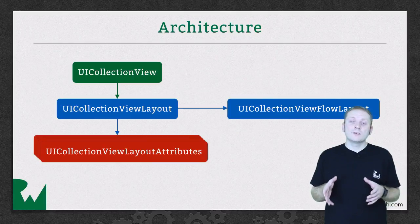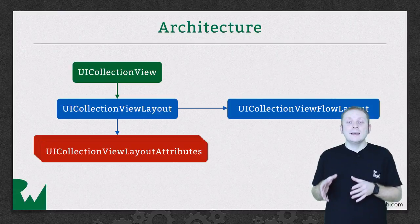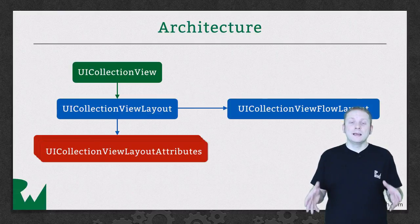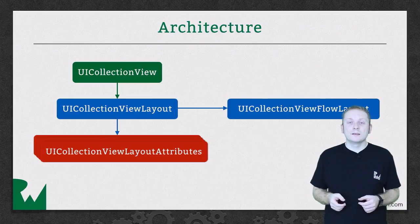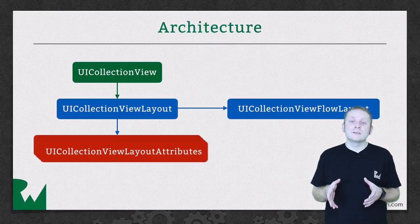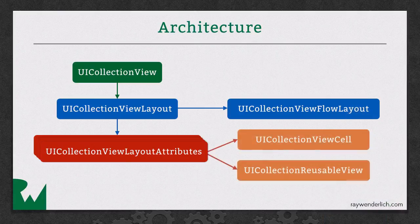Instances of UICollectionViewLayoutAttributes manage the layout-related attributes for a given item in a collection view. Layout objects create instances of this class and return them to the collection view as and when requested. The collection view then uses these layout attributes to position the cells and supplementary views within its bounds. We can hook into this process, which is especially useful if you want to pass custom information from the layout to the cells or supplementary views.